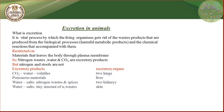What are the excretory products? The excretory products are: carbon dioxide, water, volatile materials, poisonous materials, water and salts, nitrogen waste, and spices. These excretory products exit from excretory organs. Let's talk about them one by one.